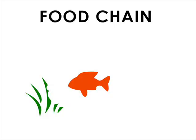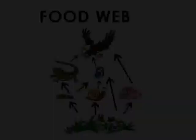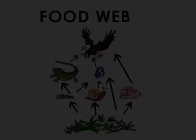A food chain is a system where each member is eaten in turn by another member. When there are several interrelated food chains, this is known as a food web.